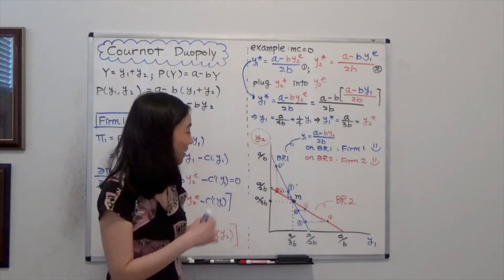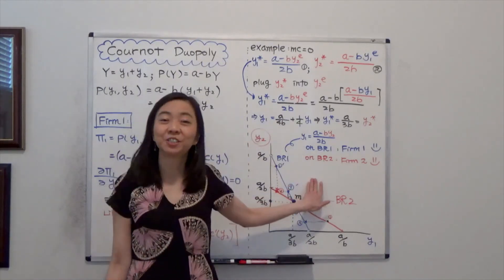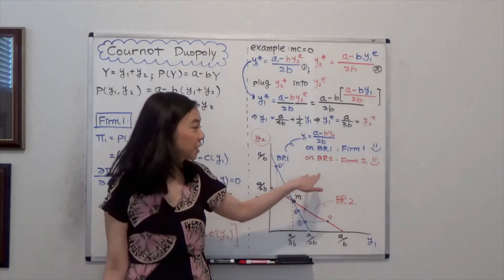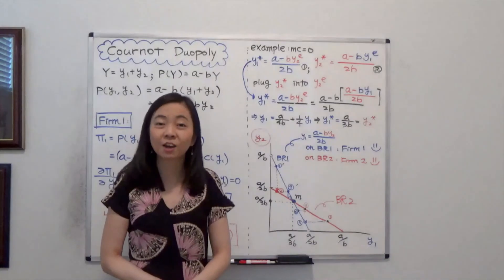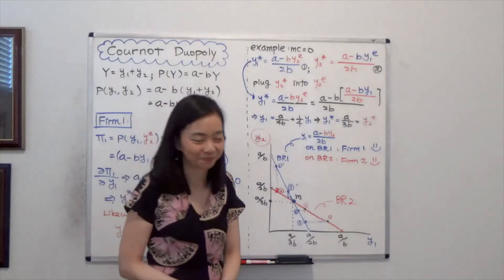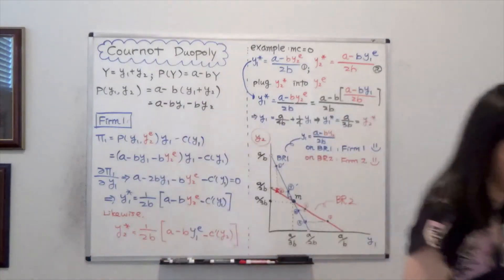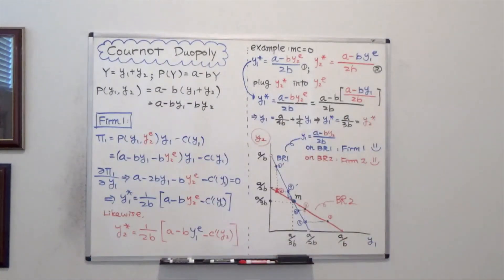This is the quantity adjustment process for Cournot duopoly. I hope this helps. I will see you in the next video. Thank you.